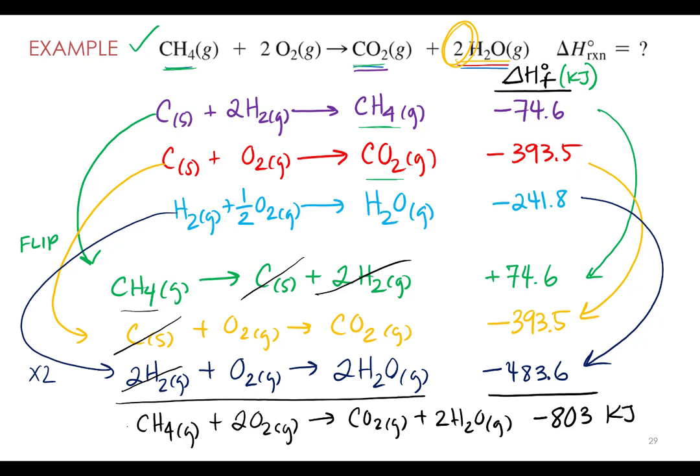In our last example, we used heat of formation reactions to calculate the enthalpy change for the overall reaction of the combustion of methane to form CO₂ and water. It turns out if you do enough of these, you'll notice a few patterns. When we used the heat of formation reaction for methane, we had to flip it, because any time you have a compound on the reactant side, the heat of formation reaction is going to have it as a product.